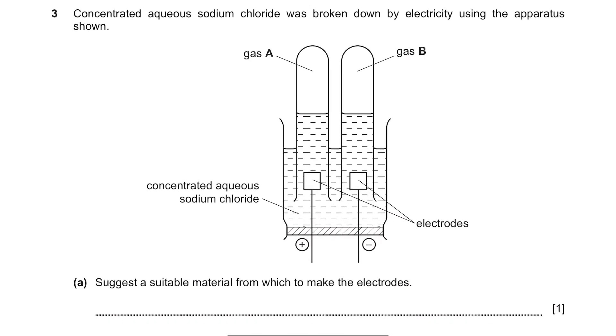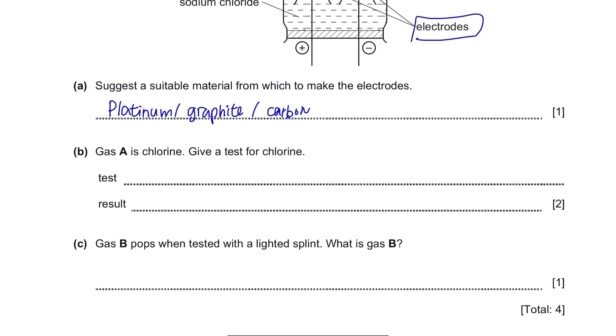Question 3. Concentrated aqueous sodium chloride was broken down by electricity using the apparatus shown. This is another example of electrolysis. Part A suggests a suitable method from which to make the electrodes. Electrodes are often made from platinum or graphite or carbon so you can write one of them. Part B. Gas A is chlorine. Give a test for chlorine. Test for gases should be memorized. So since chlorine acts as a bleach, it will bleach the damp blue litmus paper. It won't turn it red but white. Part C. Gas B pops when tested with a lighted splint. What is gas B? Which gas pops with a lighted splint? It's hydrogen.